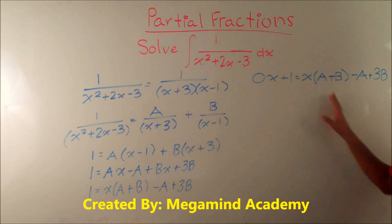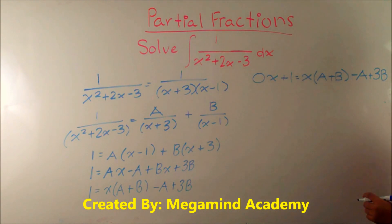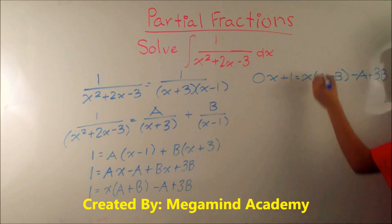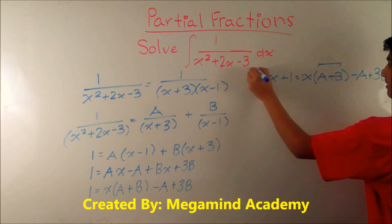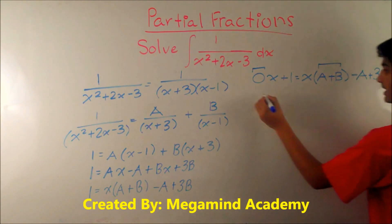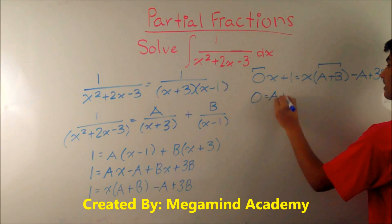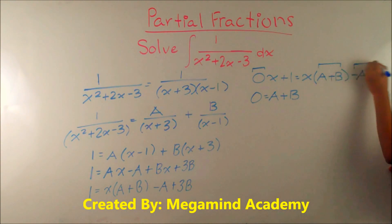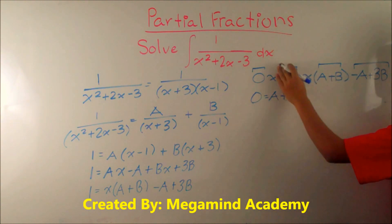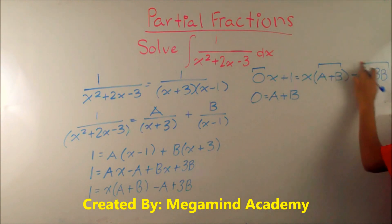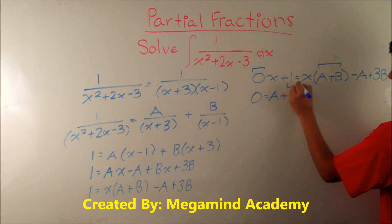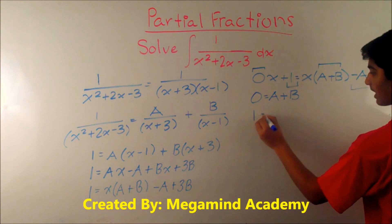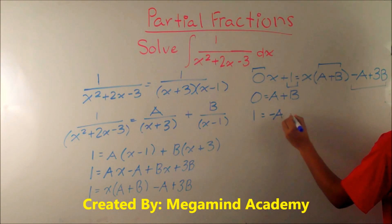Let's set up a system of equations to solve for A and B. We know that something times x is equal to 0x, so that something has to equal 0. That means 0 is equal to A plus B — that's our first equation. We also know that something has to equal the constant 1, and the constant on the right side is negative A plus 3B. So 1 is equal to negative A plus 3B.